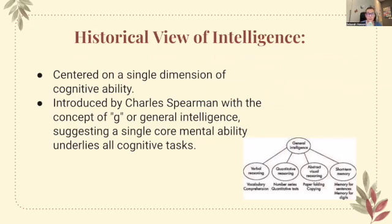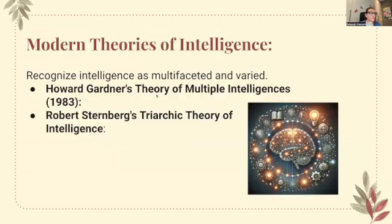Let's start with the historical view of intelligence. It's centered on a single dimension of cognitive ability, and it was introduced by Charles Spearman with the concept of G, or general intelligence — suggesting a single core mental ability which underlies all cognitive tasks.